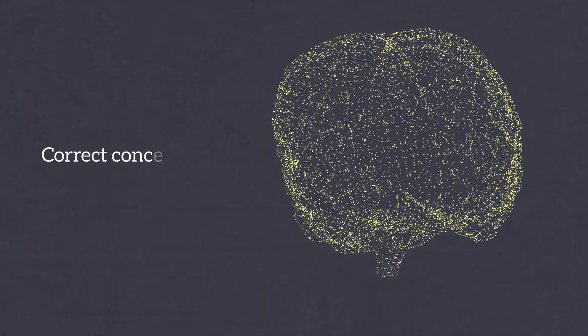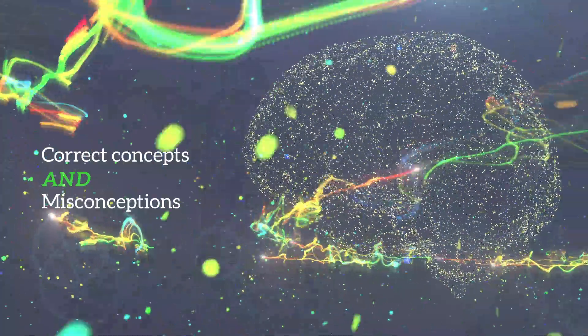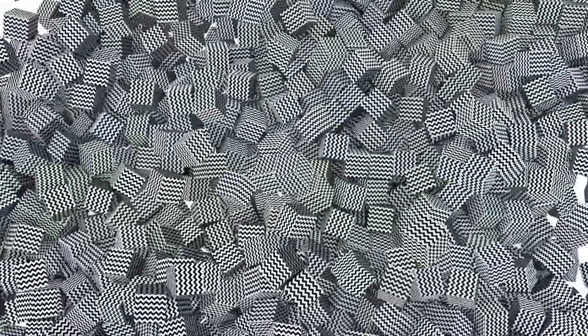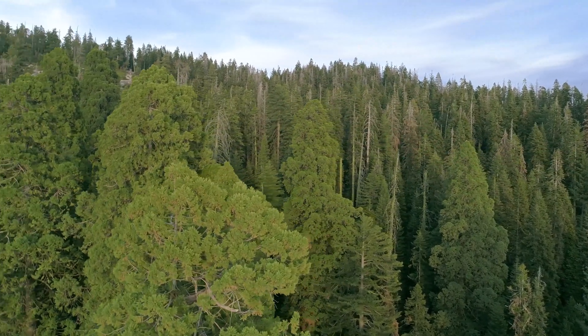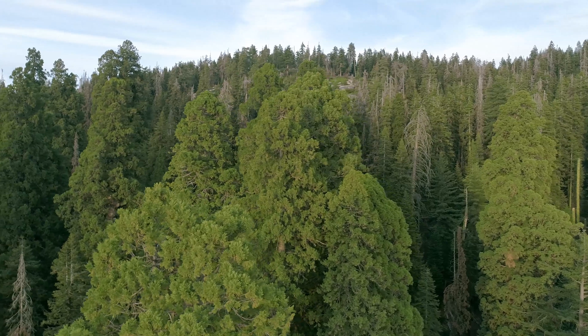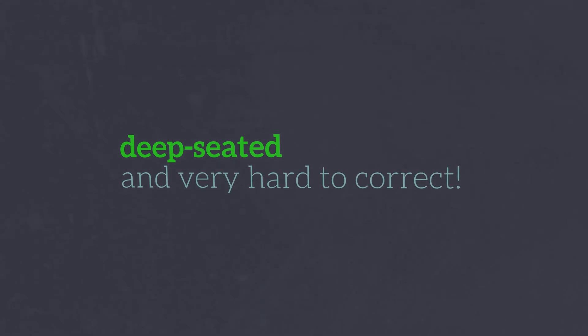Your students are not blank sheets when they arrive in class. In their heads are both correct concepts and misconceptions, and these can peacefully coexist. The flood of information, emotions, distractions, messages, and values that bombards us every day easily lets us compartmentalise — correct ideas go in one box and contradictory ideas in another. When people think about how a tree grows, many don't consider chemical reactions but assume that solid material arises from something else solid, like soil. Such misconceptions can be deep-seated and very hard to correct, so they need to be confronted.